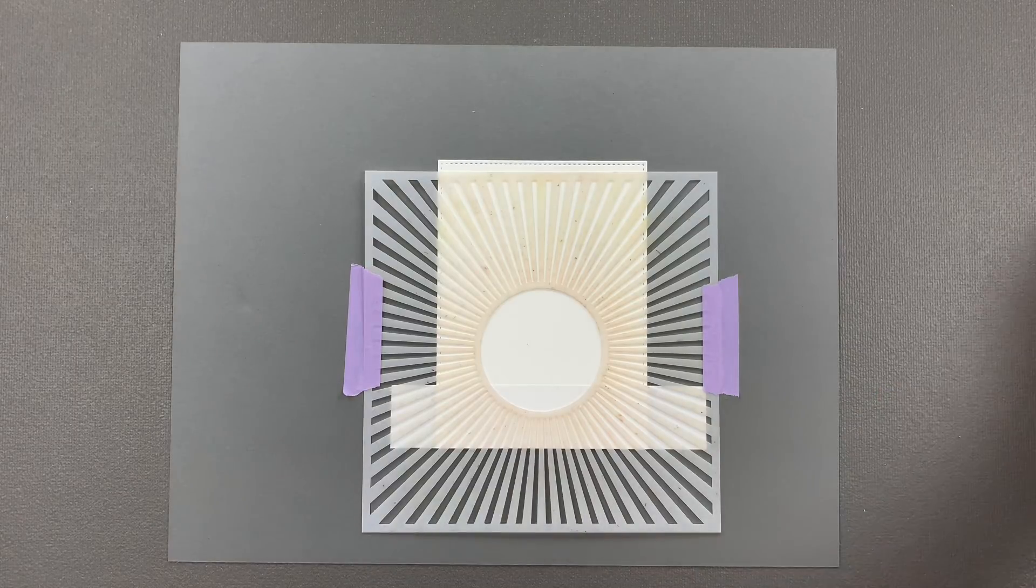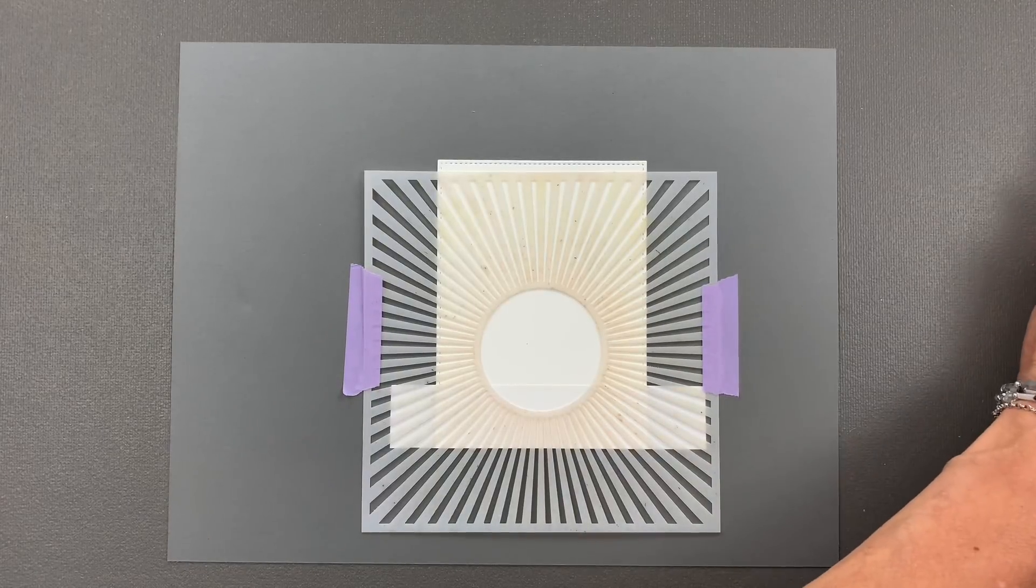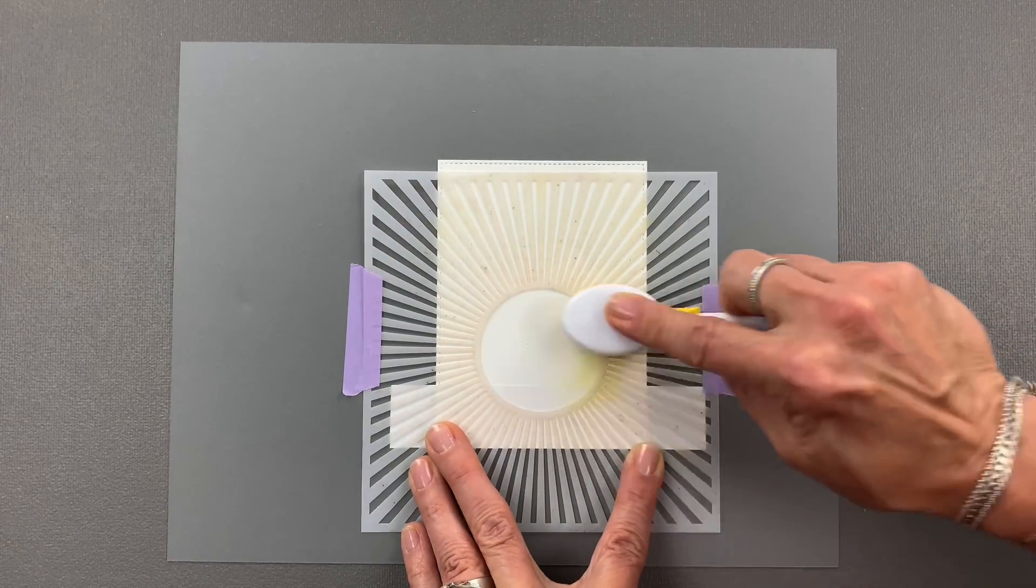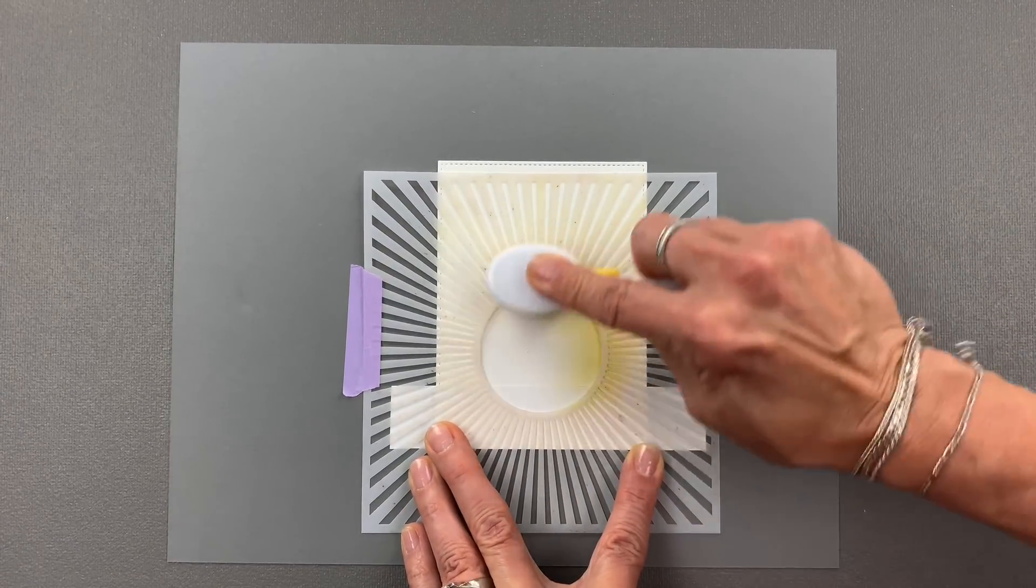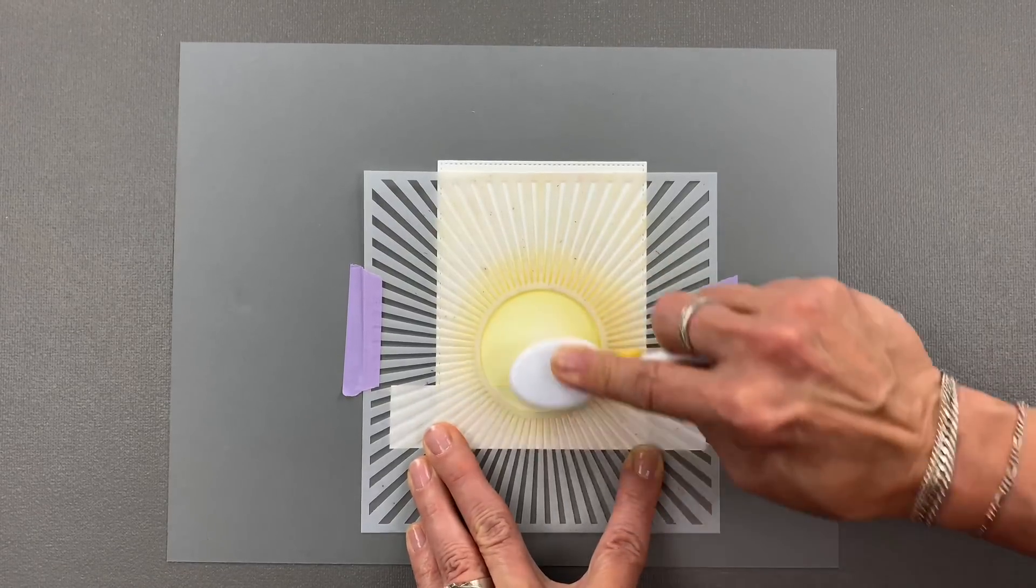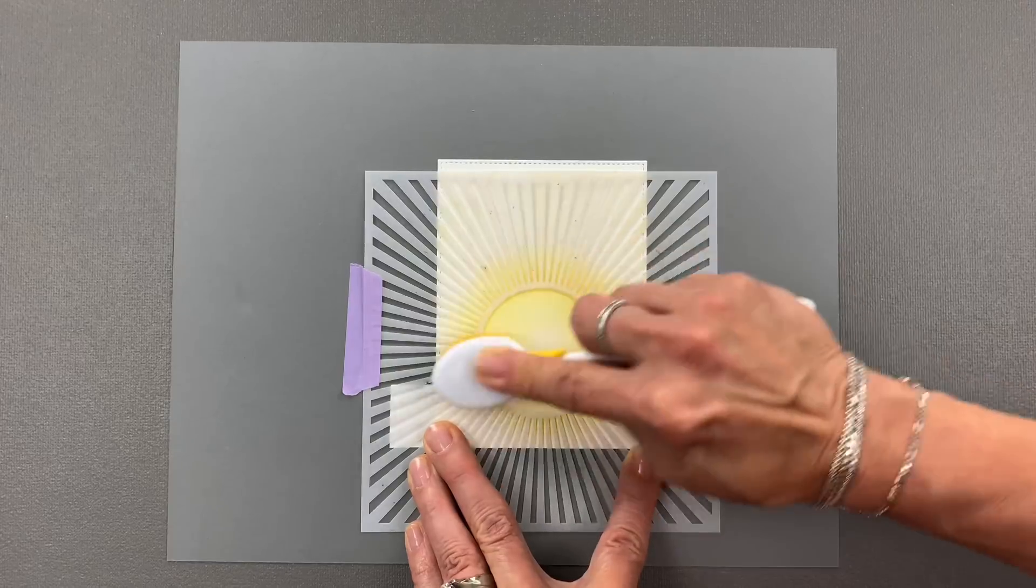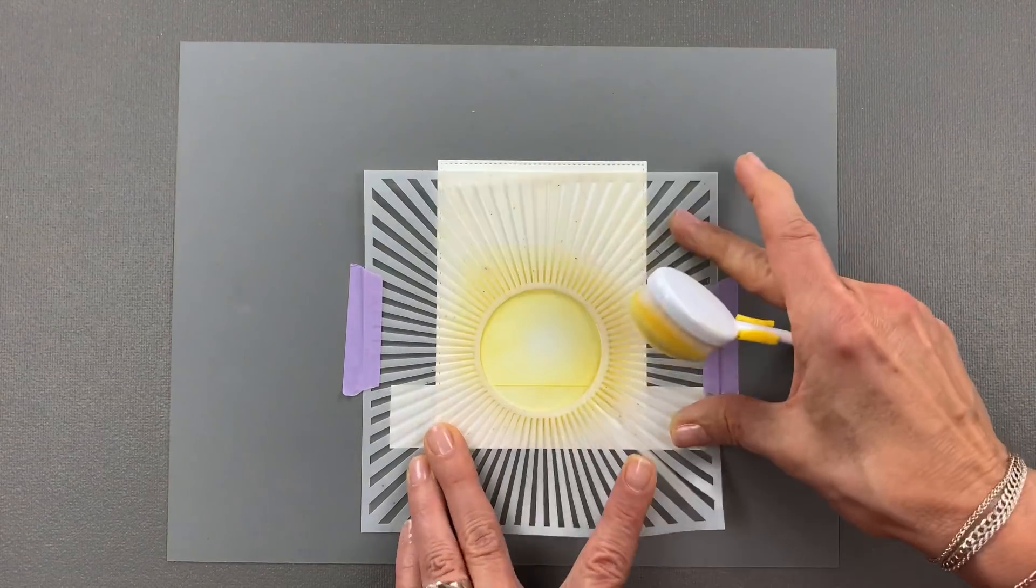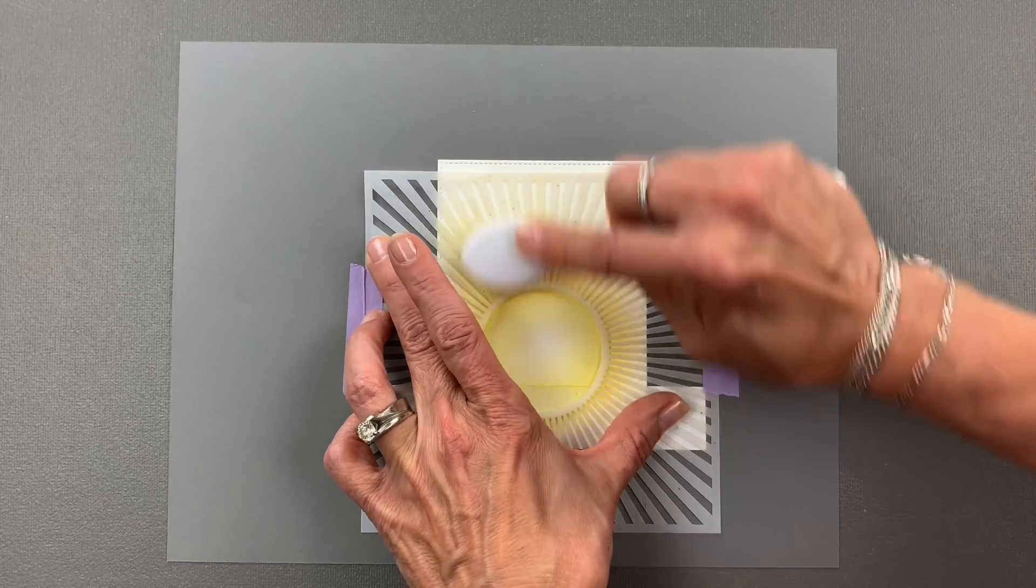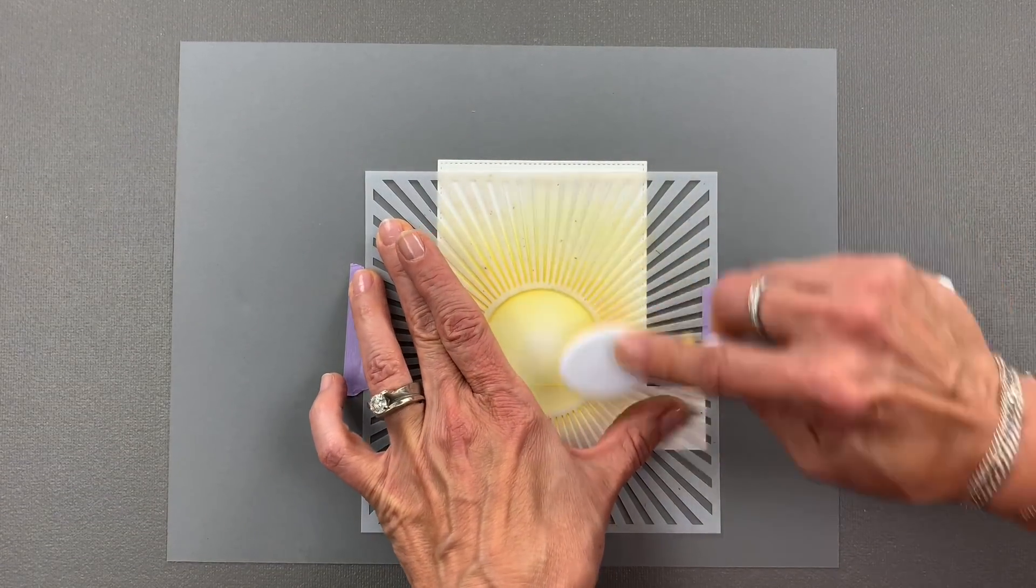Now I'm going to use some Sweet Corn ink and a blending brush and start with this yellow. I'm going to work my way around the center of the sun and then I'm still going right over that Masking Magic. Once I get done that, I'm going to work my way out getting a little bit lighter as I go out toward the edges of the rays.